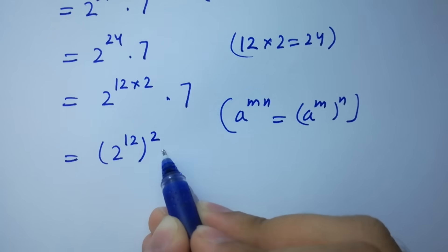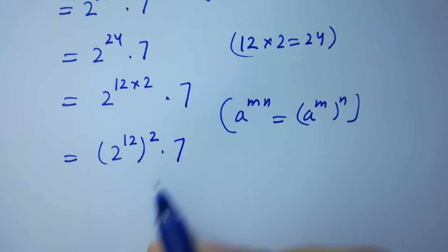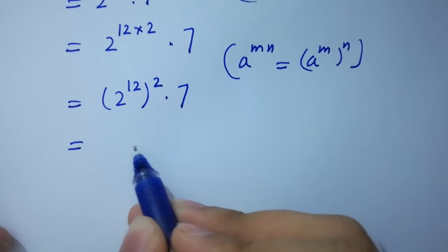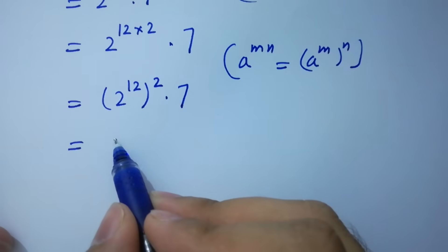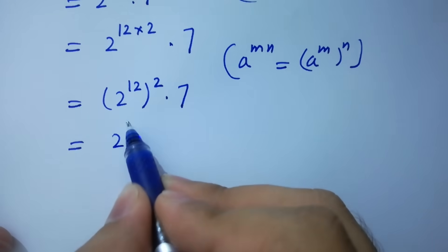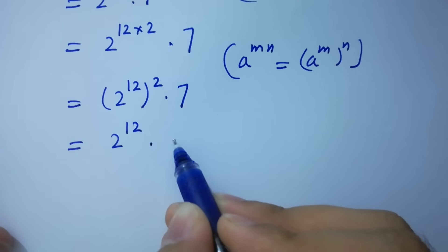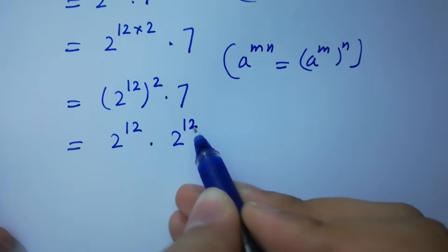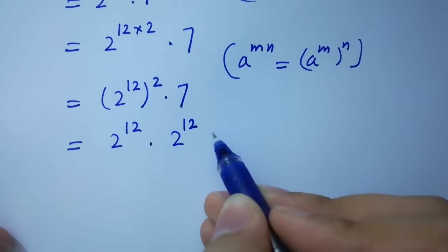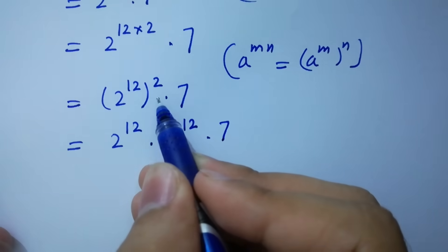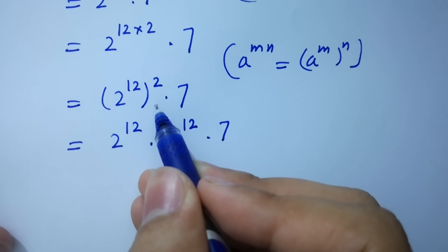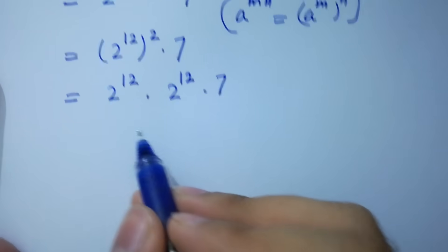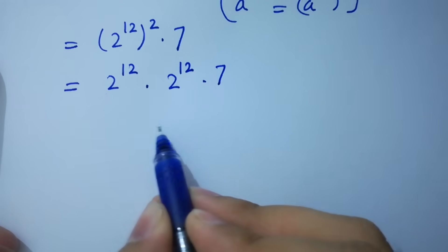Which is the same as 2 to the power 12 times 2 to the power 12, times 7, because it is two times repeated. In the next step, as we know: